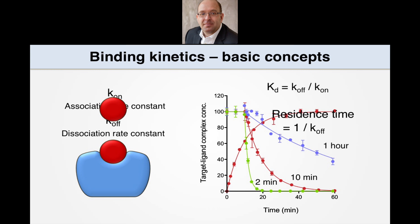This duration is often termed the residence time, which is calculated as 1 divided by K-OFF. The residence time varies between different drugs. Here the residence time is 10 minutes; here's what the data look like for a longer residence time of 1 hour, and here's the curve for a shorter residence time of 2 minutes. It turns out the binding rate constants are related to the binding affinity. Binding affinity, or K-D, can be calculated as K-OFF divided by K-ON.